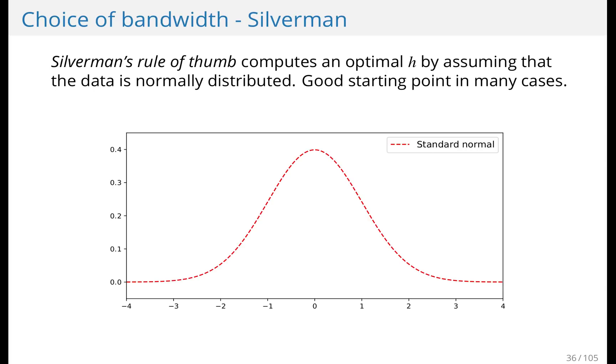For instance, consider this example. We have a standard normal distribution, we generate some data, and then we use Silverman's rule of thumb. This is our estimate. So it's fairly good.